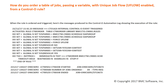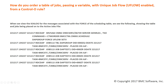When the rule is ordered and triggered, here are the messages produced to the Control-O Automation Log showing the rule: PARM1 being set, PARM2, turning resolve off, PARM3 being set to the literal string, resolve turned back on again, and then the Do TSO action. As we can see, the Control-O server went ahead and executed the CLIST. When we look at the IOA log for the messages associated with the force of the scheduling table, we can see the table and jobs being placed onto the active jobs file.